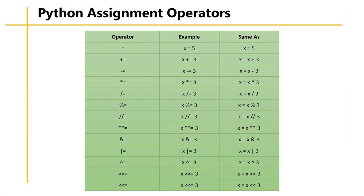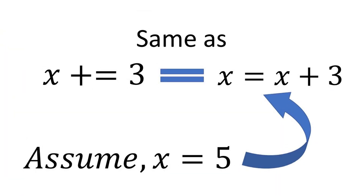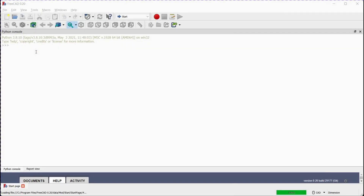Now we will learn Python assignment operators. There are 13 assignment operators. Out of 13, one expression is shown: x plus equals 3. This expression means the value 3 will be added to the initial value of x. For example, let's assume the initial value of x is 5. With this expression, the new value of x will be 5 plus 3, which is equal to 8. Let's do the same in the Python console.